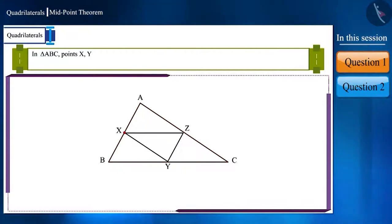Let's start with our first question. In triangle ABC, points X, Y and Z are the midpoints of sides AB, BC and AC respectively.